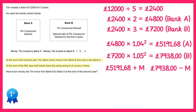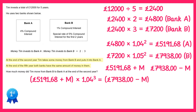We're told that at the end of the fifth year both banks have the same amount of money in them. So if this is how much is in each bank after year two and we continue with the compound interest calculation, we need to end up with the same value for both banks. In Bank A we've got 5,191.68 plus M left for three more years at 4% compound interest, so times 1.04 to the power 3. This must equal Bank B: 7,938 take away M, now at the usual rate of 1% for three years, so times 1.01 cubed.